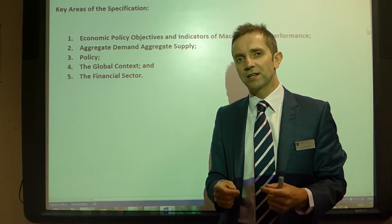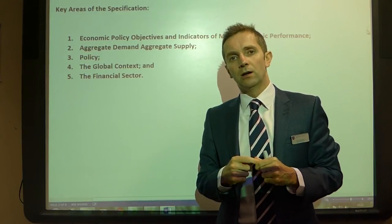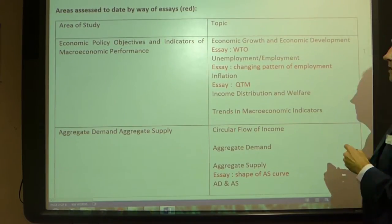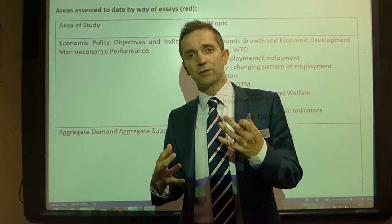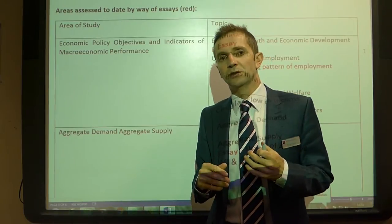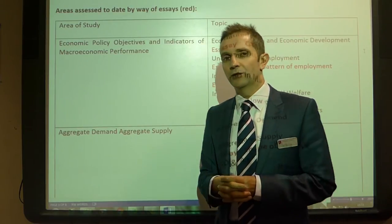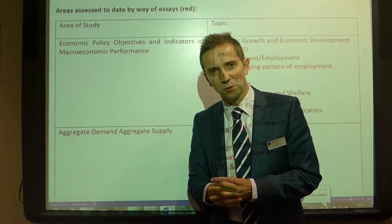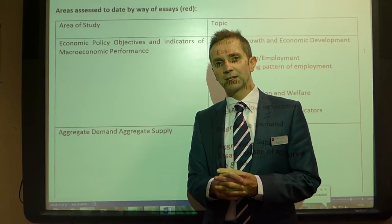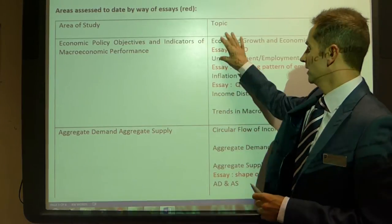In the same way as I did for the micro paper, let's look at which areas have been targeted the most when it comes to essays for the macroeconomics paper. Areas assessed to date by way of essays are shown in red — either on the specimen assessment materials on the website or the additional SAMs papers your teachers have passed on from the OCR interchange. There's a link in one of my previous videos called Economics Revision Resources where you can find all of those.